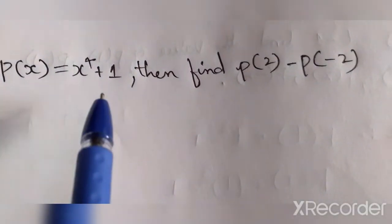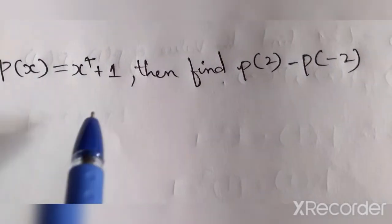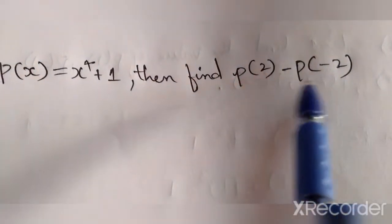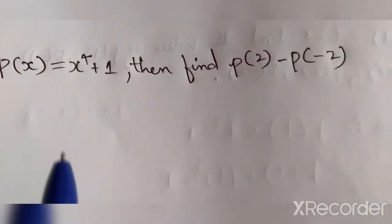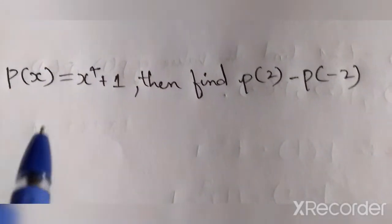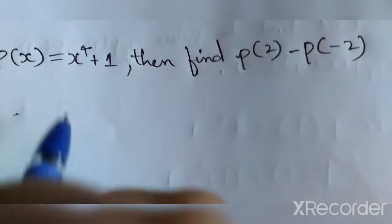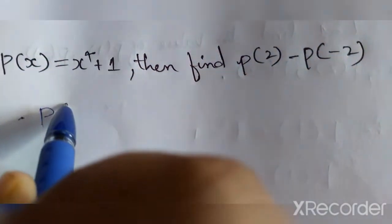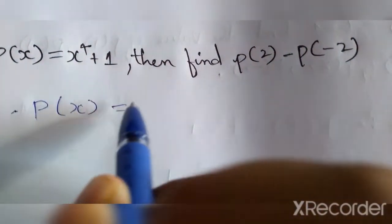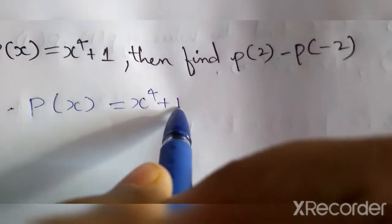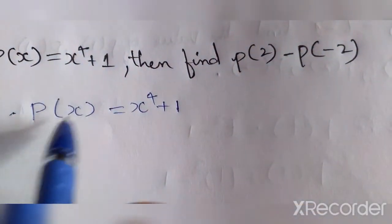p(x) equals x^4 plus 1, then find p(2) minus p(-2). First, we should write the given part: p(x) equals x^4 plus 1. Then we substitute values in the x place.